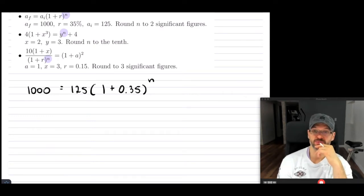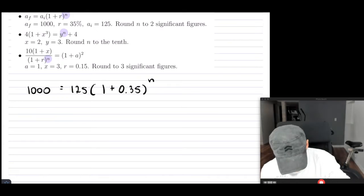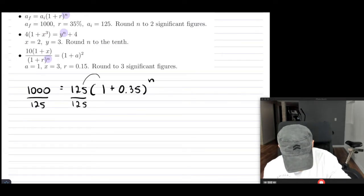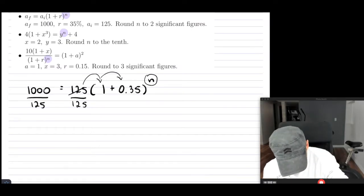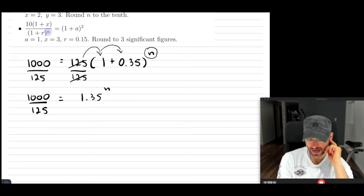Now it says round to two significant figures, so we'll do that once we solve. So the first item, let's simplify this. So I'm going to divide both sides by 125. In this case, I can't bring this inside of the bracket like this because I have an exponent which is working on that bracket.